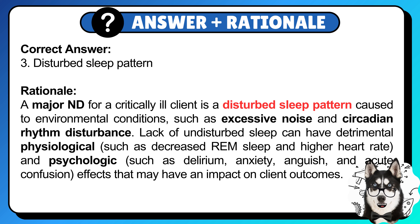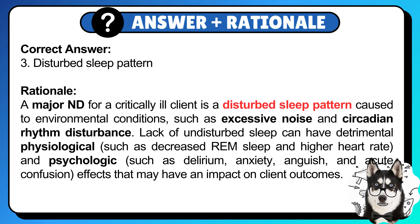Correct answer: 3. Disturbed sleep pattern. A major nursing diagnosis for a critically ill client is a disturbed sleep pattern caused by environmental conditions such as excessive noise and circadian rhythm disturbance. Lack of undisturbed sleep can have detrimental physiological effects such as decreased rapid eye movement sleep and higher heart rate, and psychological effects such as delirium, anxiety, anguish, and acute confusion, all of which may have an impact on client outcomes.